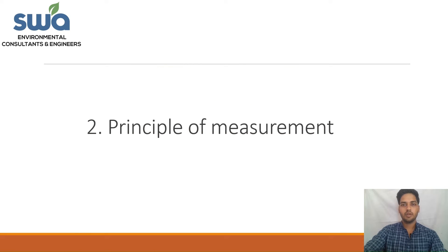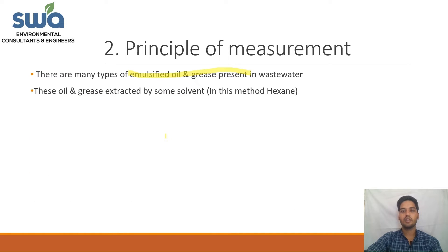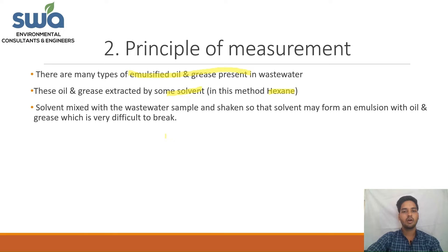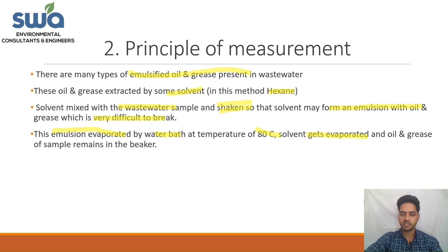Now let's understand the principle of analysis for oil and grease. There are many types of emulsified oil and grease present in wastewater. To extract them, we use a solvent — here we are using N-hexane. The solvent and wastewater sample are mixed and shaken, forming an emulsion of solvent and oil and grease that is very difficult to break. We then evaporate this emulsion on a water bath at 80°C, so the solvent evaporates and traces of oil and grease remain in the beaker. By pre-weighing and post-weighing the beaker, we can measure the oil and grease in the sample.